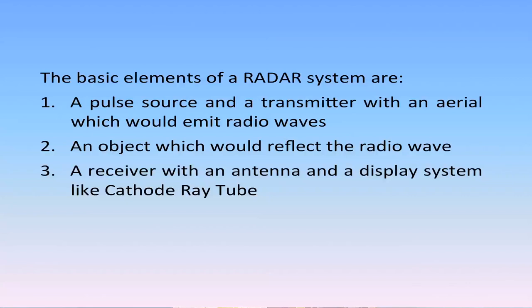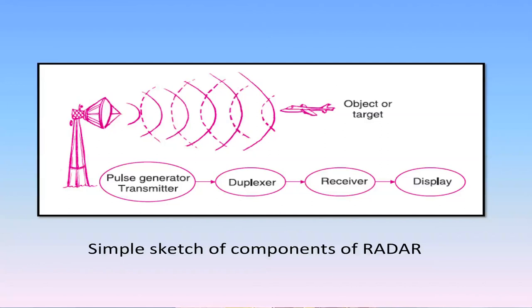The basic elements of a radar system are: first, a pulse source and a transmitter with an aerial which emits radio waves; second, an object which reflects the radio wave; third, a receiver which may be an antenna and a display system like a cathode ray tube. The transmitter generates and sends a radio wave in all directions. If there is any object, the wave is reflected by it, and the receiver detects the reflected wave. Radio waves are electromagnetic radiations and travel at the velocity of light, so the time gap between the outgoing and reflected wave is very small. As soon as the radio wave is emitted, the transmitter is switched off and the receiver is switched on, so the reflected wave is not masked by the emitted wave and even a weak reflected wave is not missed.